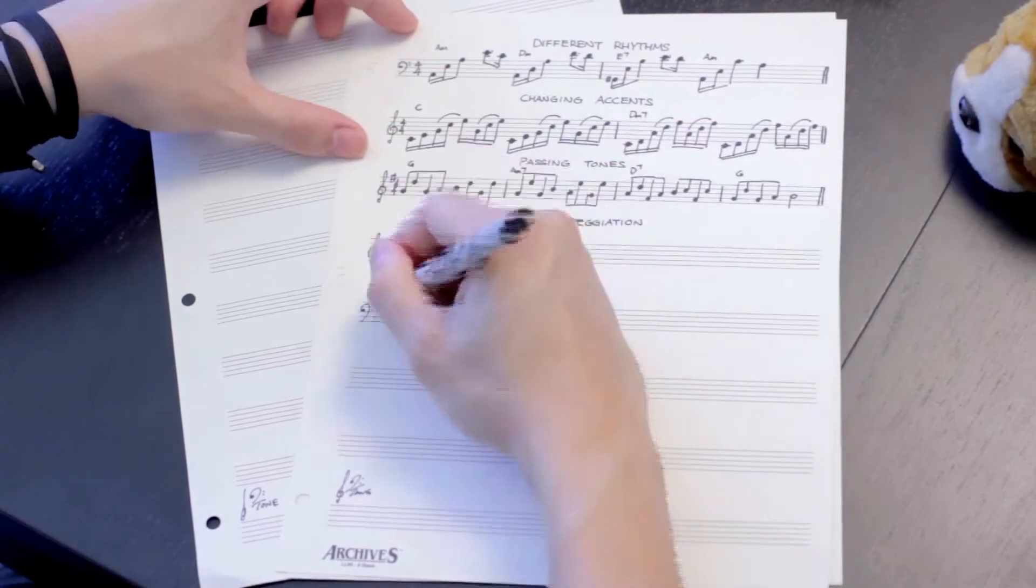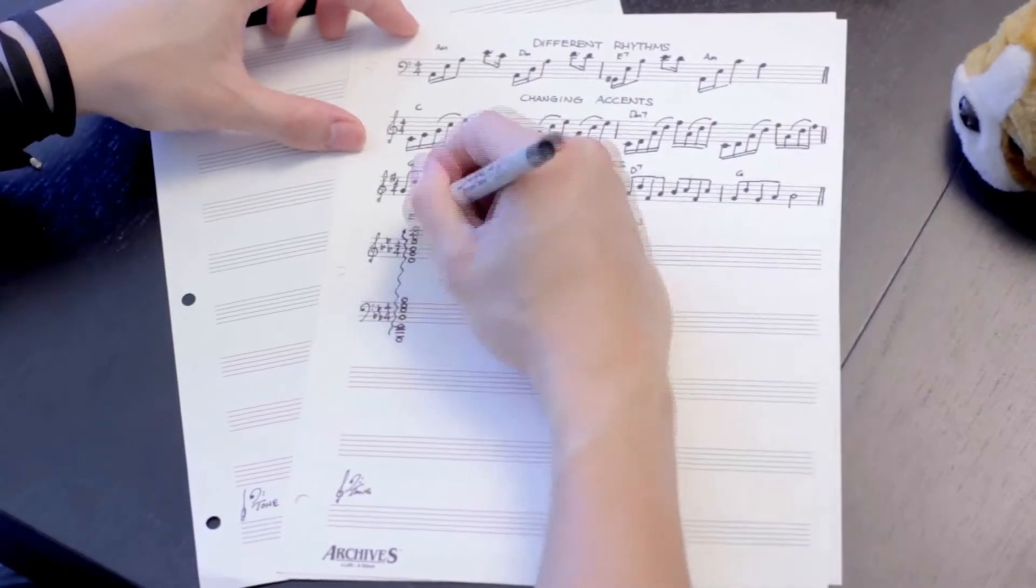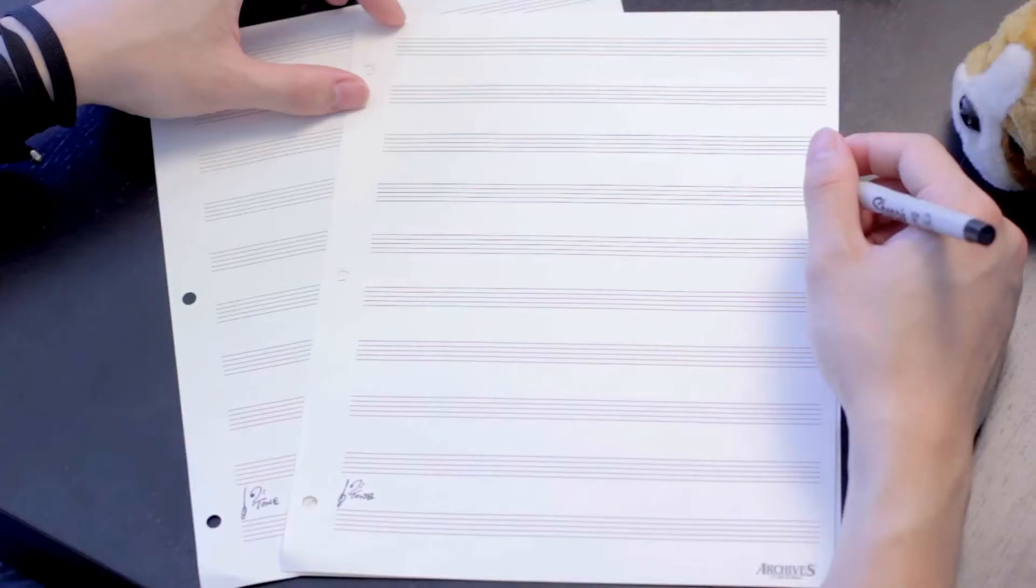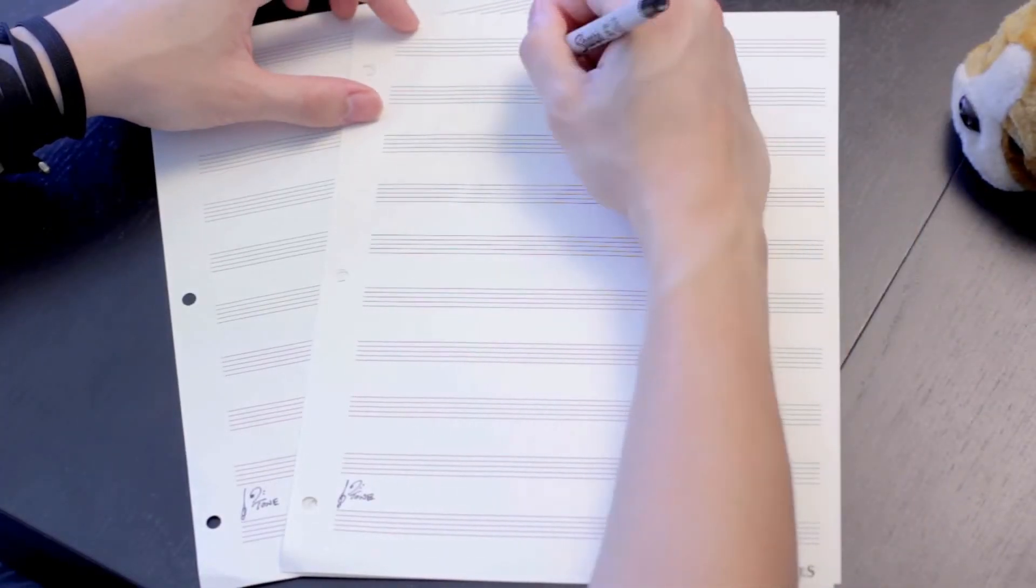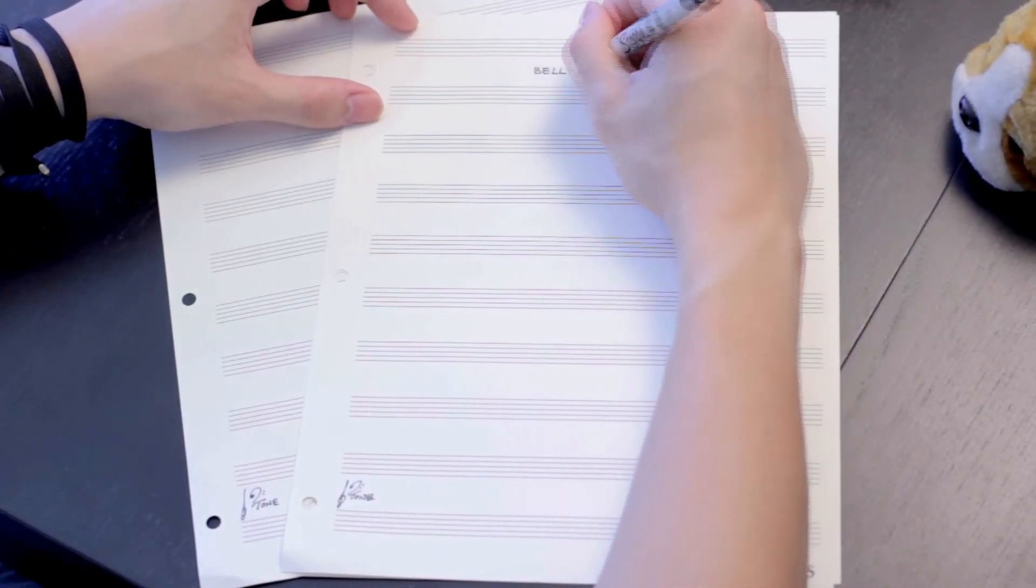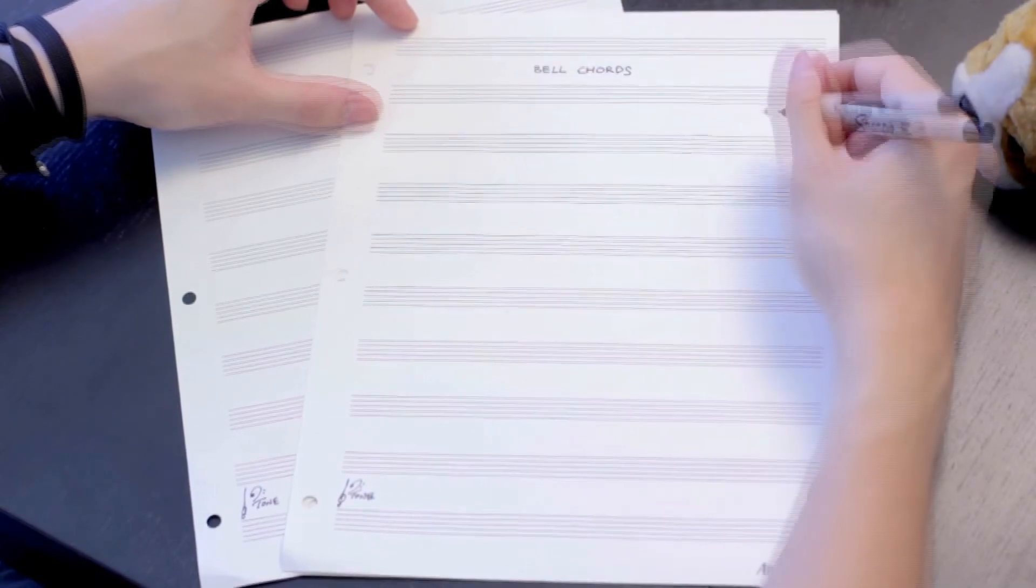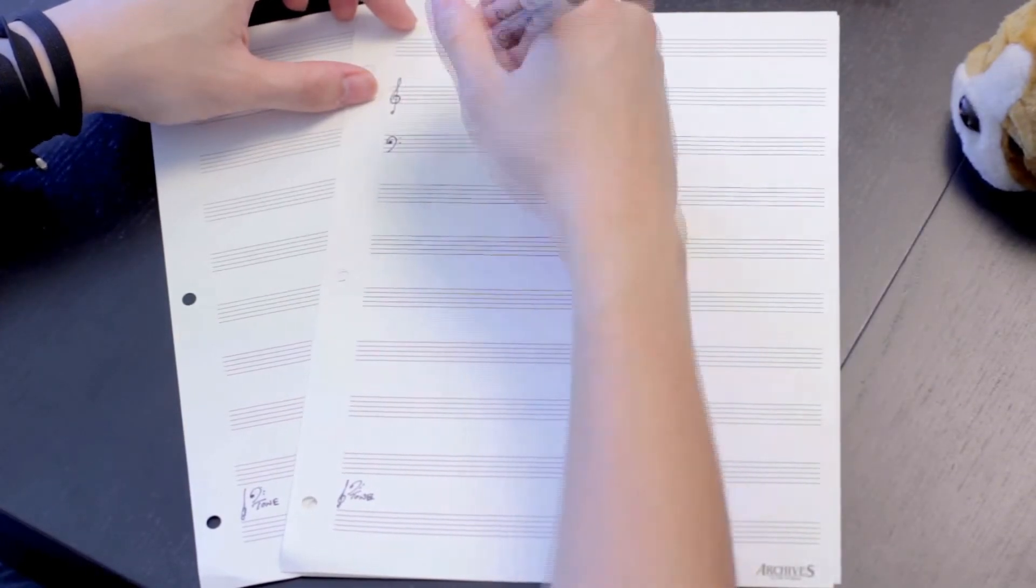One common variation on arpeggios is a technique called a bell chord, where the attacks are staggered as in an arpeggio, but the notes are sustained by different instruments, building harmony across the section as the arpeggiation develops.